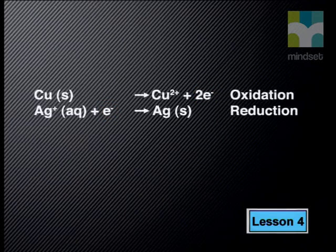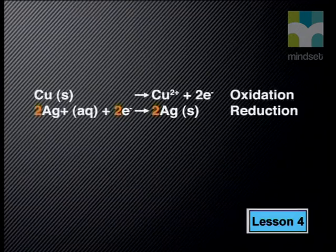Now let's add these two half reactions together. How many electrons were transferred? Copper lost two electrons but the silver ion gained only one. Because charge is always conserved, the number of electrons donated by the reducing agent must equal the number gained by the oxidizing agent. We balance this by multiplying the reduction half reaction by two so the same number of electrons appears on both sides.